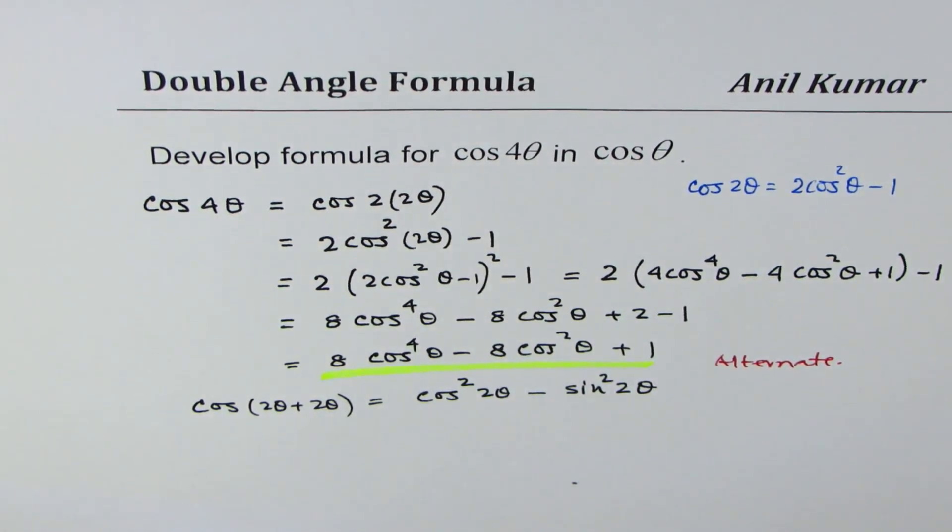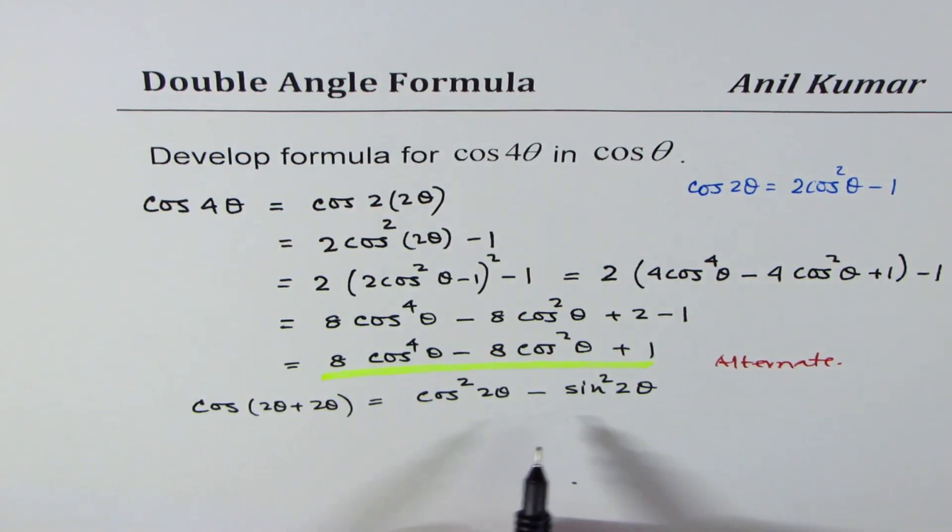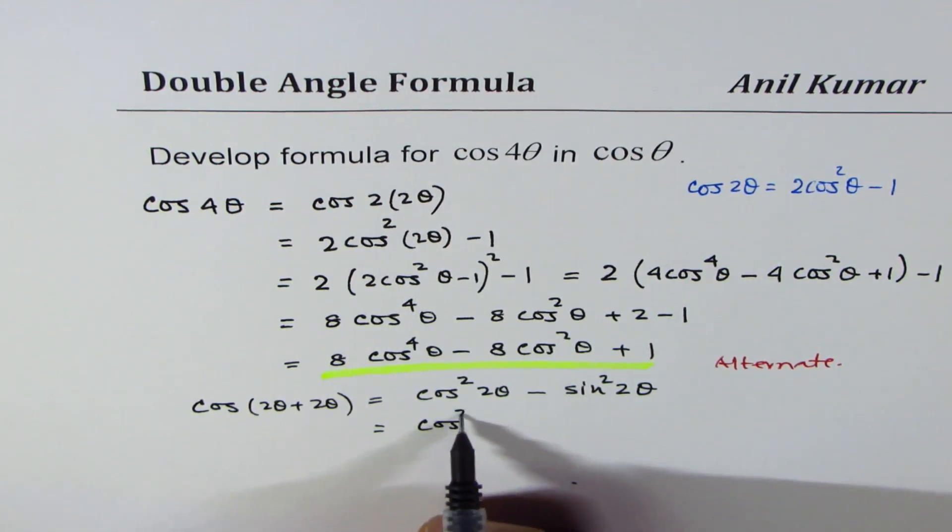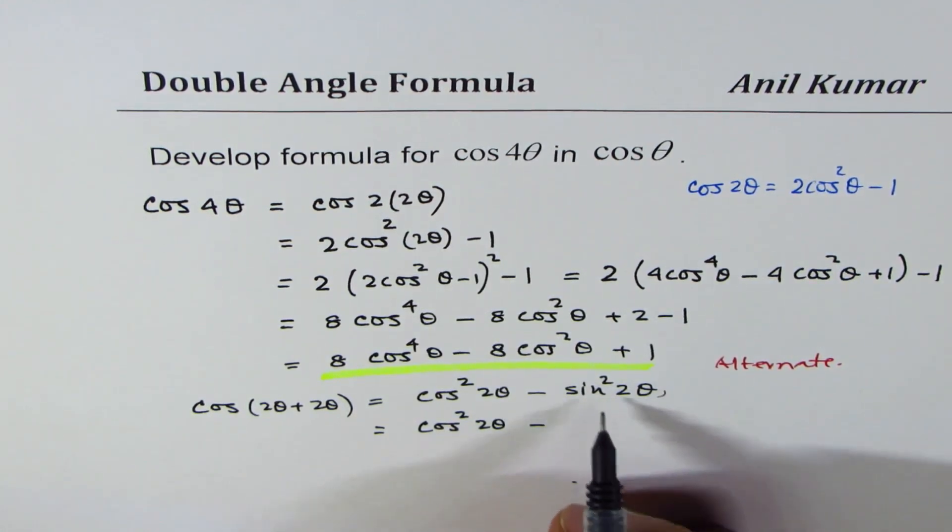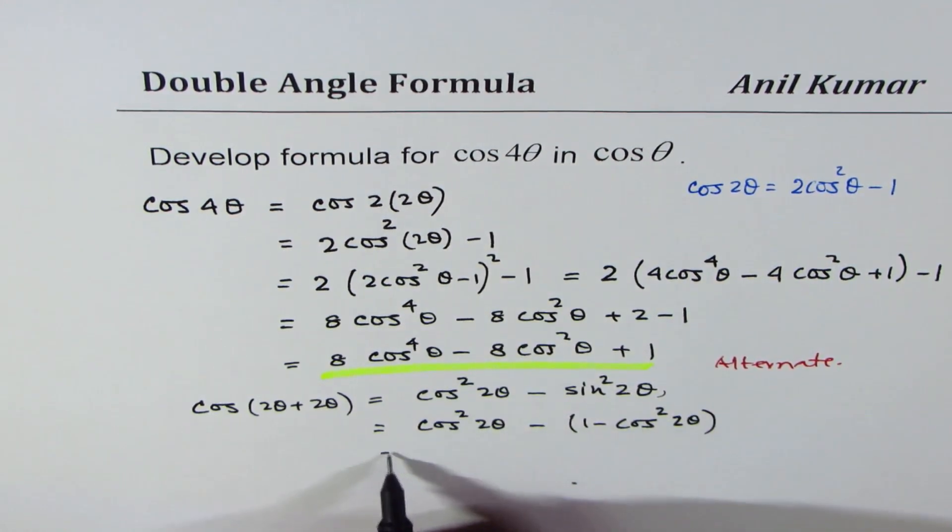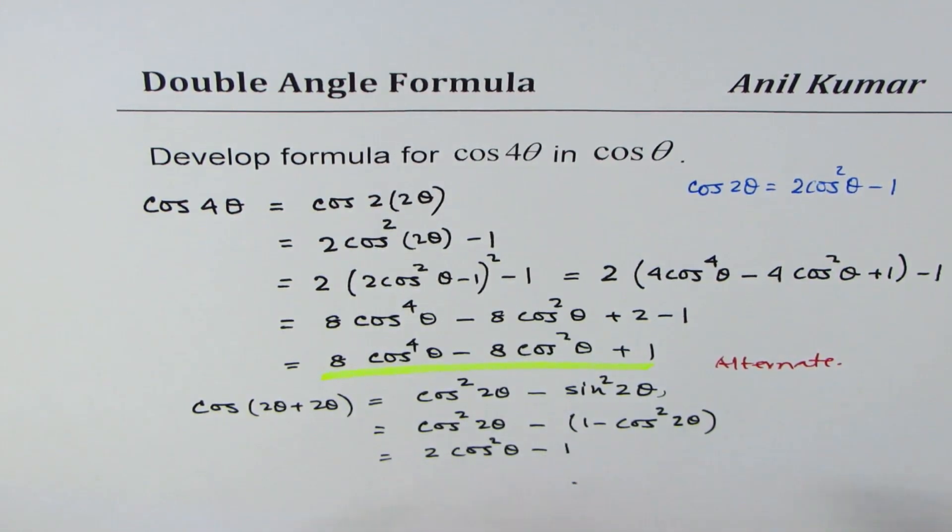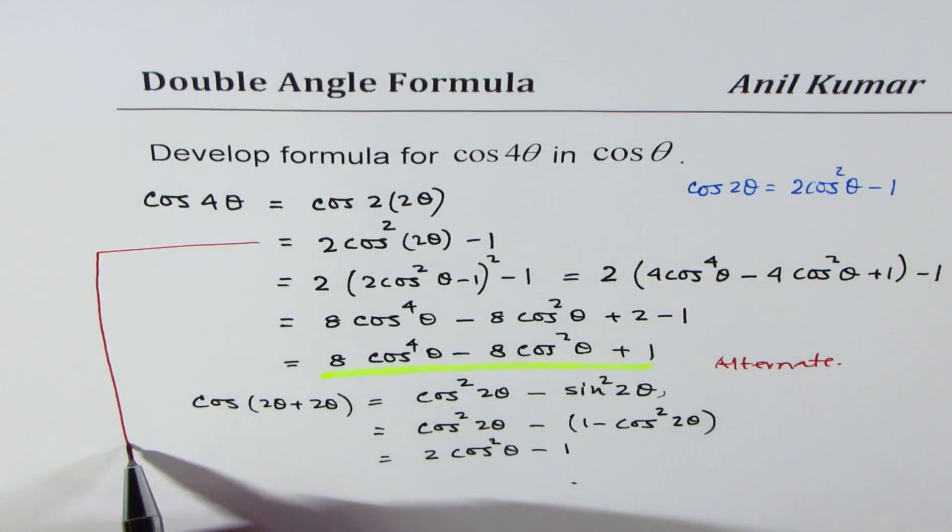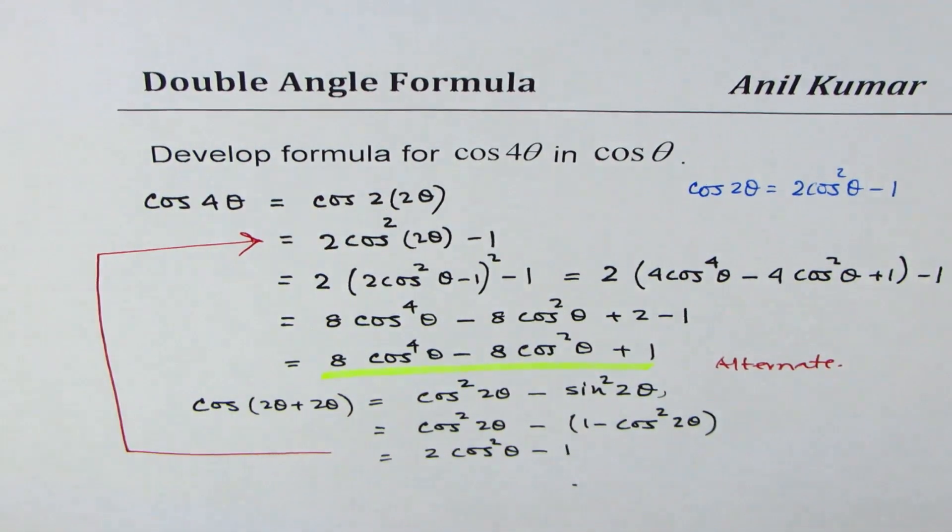You could do like this. And in this case, if you do like this, we could write this as cos²(2θ) minus, replacing sin²(2θ) by 1 minus cos²(2θ), and that gives you the original formula which is 2 cos²(2θ) minus 1. And from here, you go back to this and then follow the steps.